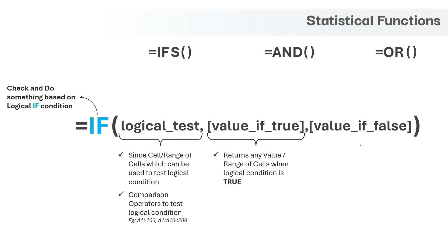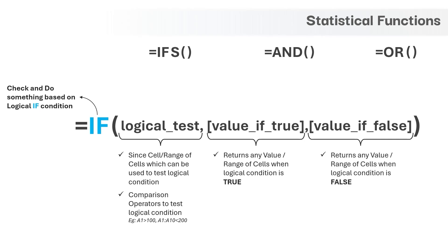Following the same logic, the third argument will come into play when the logical condition is false and again we can provide any value as input to this argument.